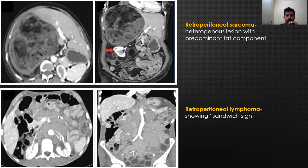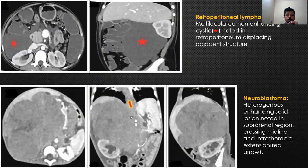Another case showed multiple homogeneously enhancing lesions of varying sizes noted in the para-aortic region, encasing the IVC and aorta, giving an appearance of a sandwich sign. It is a classical case of retroperitoneal lymphoma.